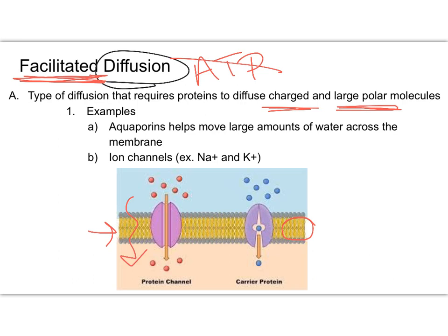Examples of facilitated diffusion include aquaporins. Aquaporins do exactly what they sound like — they let water pour in. They form a pore or hole, acting like a protein channel within the cell membrane so that large amounts of water can move across. Small amounts of water can diffuse across the membrane on their own, but aquaporins allow larger amounts to move back and forth, which allows the cell to quickly regulate and maintain its concentrations.